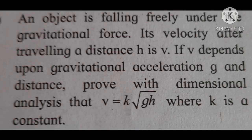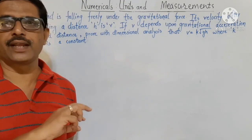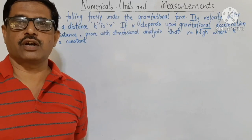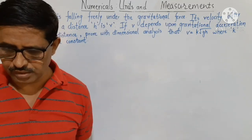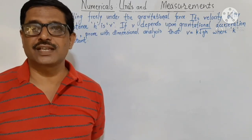Next problem: an object is falling freely under gravitational force. Its velocity after travelling a distance h is v. If v depends upon gravitational acceleration g and distance h, prove using dimensional analysis that v equals k times the square root of g into h, where k is a constant. This is a numerical based on the uses of dimensional analysis to derive a relation between physical quantities.